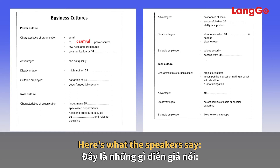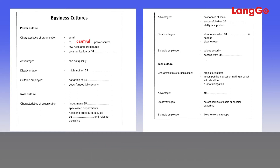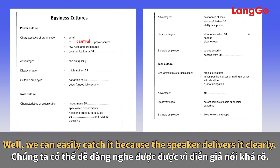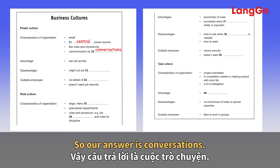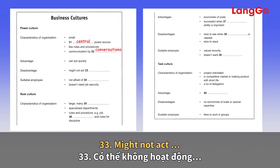Question 32 — communication by. The speaker says: another characteristic is that communication usually takes the form of conversations rather than formal meetings or written memos. We can easily catch this because the speaker delivers it clearly — it takes the form of conversations — so the answer is 'conversations'.